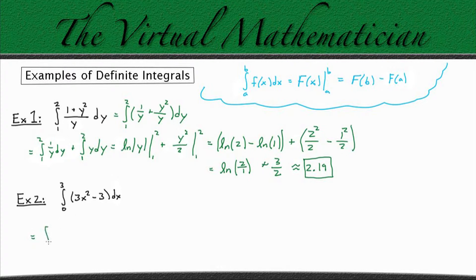I'm going to rewrite this as the integral from 0 to 3 of 3x squared dx minus the integral from 0 to 3 of 3 dx.